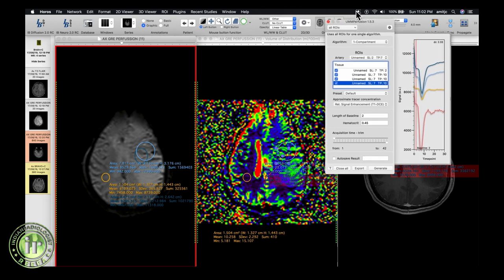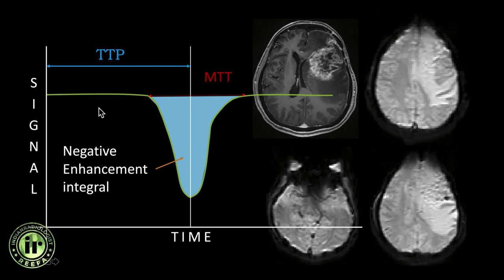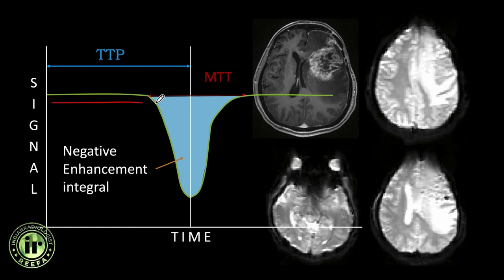Switching to theory of perfusion imaging: perfusion imaging utilizes the bolus passage of contrast through blood vessels in the brain parenchyma. Typically there is a baseline, then a dip in signal intensity once contrast arrives, followed by baseline recovery and a tail. The time between contrast administration and minimum signal is the time to peak. The area under this negative enhancement curve is the negative enhancement integral (NEI), from which cerebral blood volume is calculated. MTT is the time between bolus appearance and recovery to baseline.